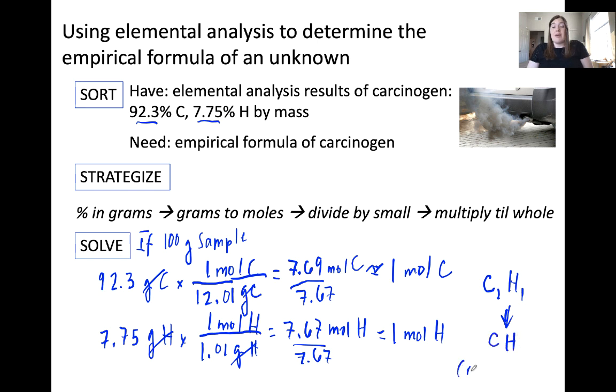Simplified how we would normally write our empirical formula would be CH. Now this has a mass of 13.0 grams per mole. I'm just noting that here so that you can remember it for the next part of this problem. In this case, we've solved the problem. CH is the empirical formula of our unknown carcinogen.